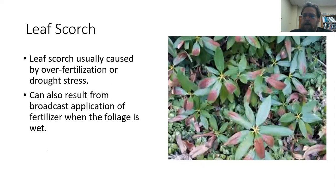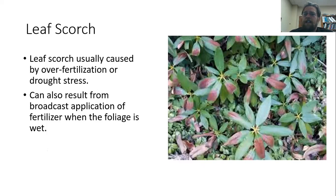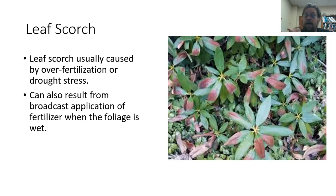Leaf scorch — browning of the edges and tips of leaves — is a very common symptom of drought stress. If it's been very dry with no supplemental water, you'll start to see that. It can also happen if broadcast fertilizer got onto the plant, particularly when it was wet. Address it by adding water if it's a drought issue, and if it's a fertilizer issue, generally the plant will grow out of the problem over time — just don't repeat the injury.